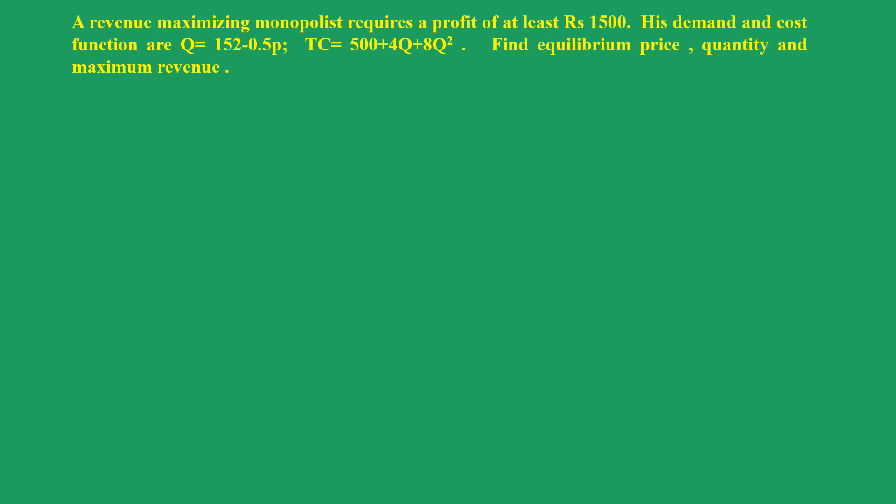A revenue maximizing monopolist requires a profit of at least Rs. 1500. His demand and cost functions are Q = 152 - 0.5p, TC = 500 + 4q + 8q². Find equilibrium price, quantity, and maximum revenue.